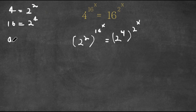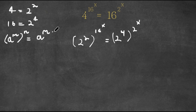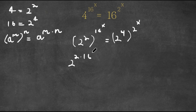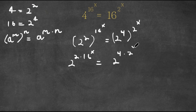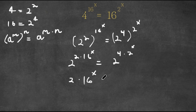Now if we have something in the form a to the power of m to the power of n, this is equal to a to the power of m times n. Applying this, 16 to the power of x becomes 2 times 16 to the power of x on the left side, and on the right side 2 to the power of 4 to the power of 2 to the power of x becomes 4 times 2 to the power of x. Now because both of these bases are the same, this means that the exponents are the same as well, meaning 2 times 16 to the power of x is equal to 4 times 2 to the power of x.